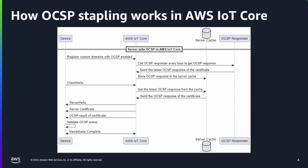How does OCSP stapling work in AWS IoT Core? With OCSP stapling enabled for your custom domain in AWS IoT Core, the service calls an OCSP responder every hour to get the certificate's revocation status. It then caches the latest valid OCSP response. During a TLS handshake, AWS IoT Core retrieves this cached response and includes it along with the server certificate sent to the client device. The device can then validate the certificate status using the stapled OCSP response.